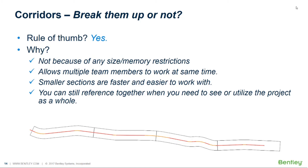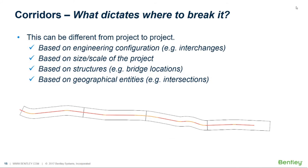When breaking up corridors, the decision of where to break may be based on engineering configurations — for example, in an interchange each ramp corridor in its own file. It may be based on the size or scale of the project, such as breaking a 10-mile job into two 5-mile pieces. It might be based on structures — the section before the bridge and after the bridge — or geographical entities like major intersections. This is really on a project-by-project basis, but take advantage of reference files; your project will be faster and more efficient.